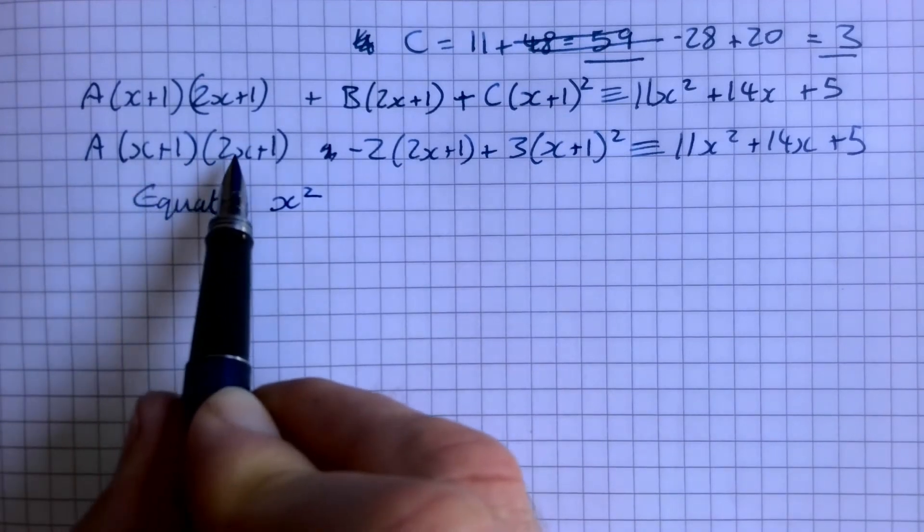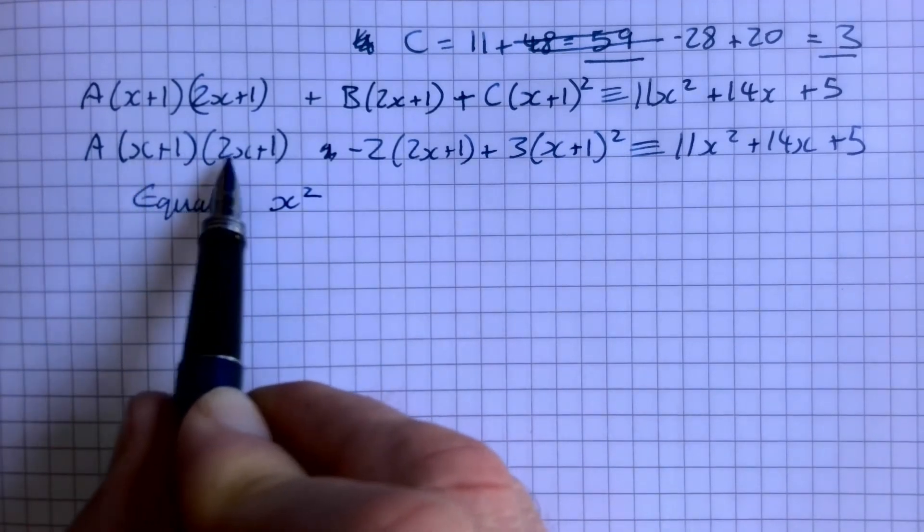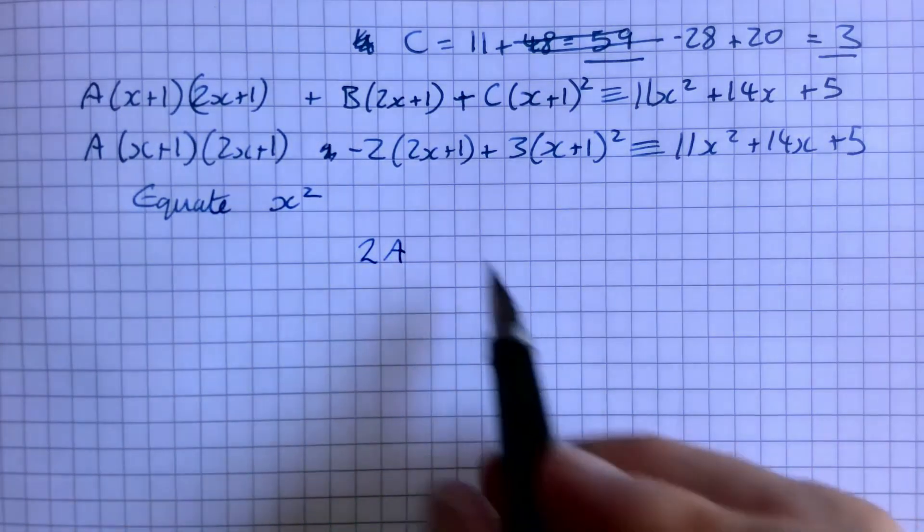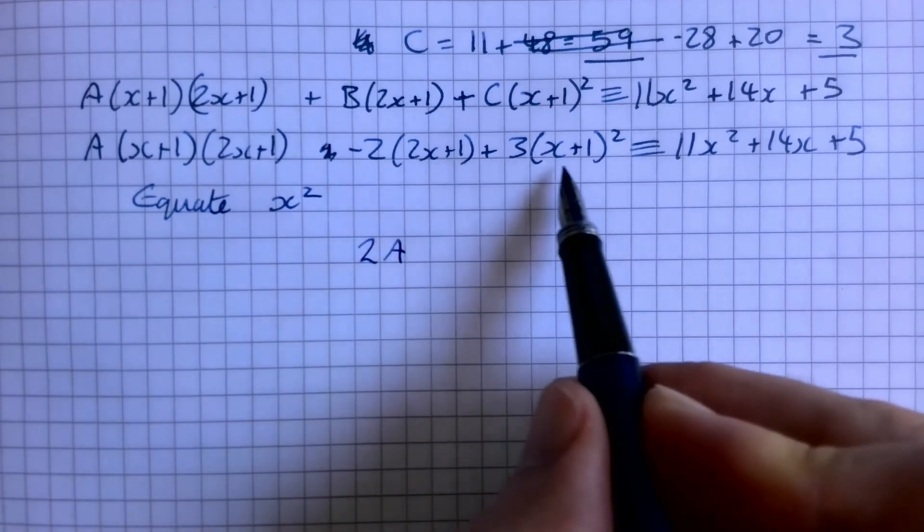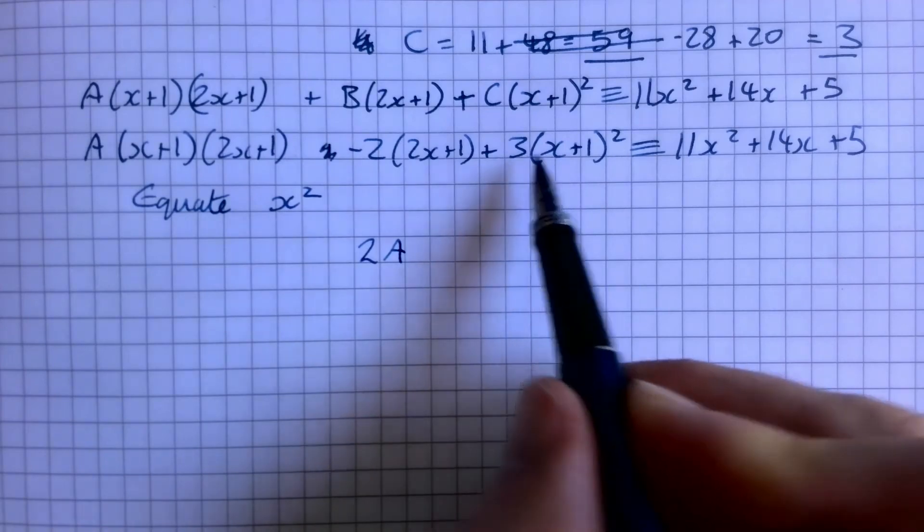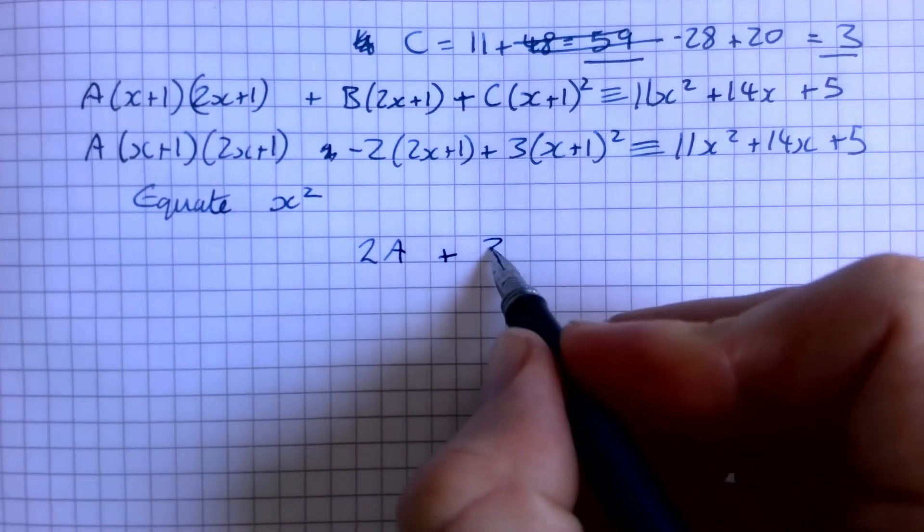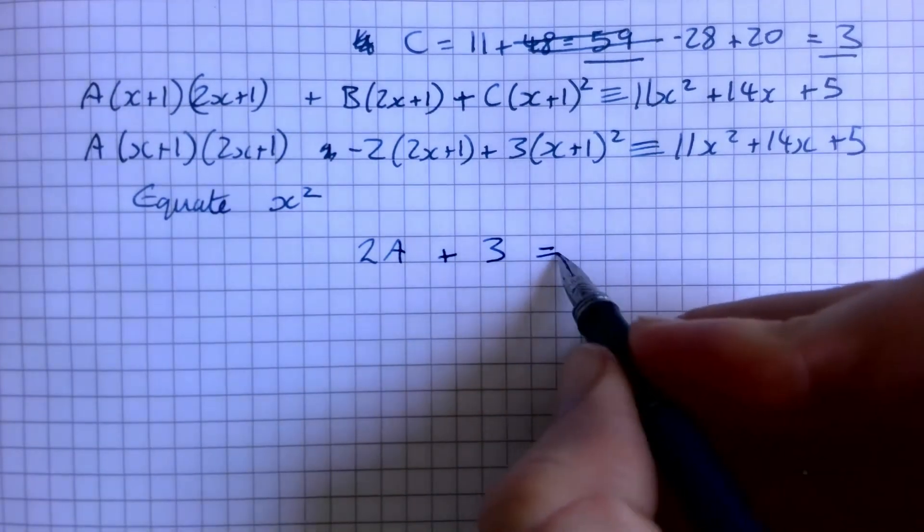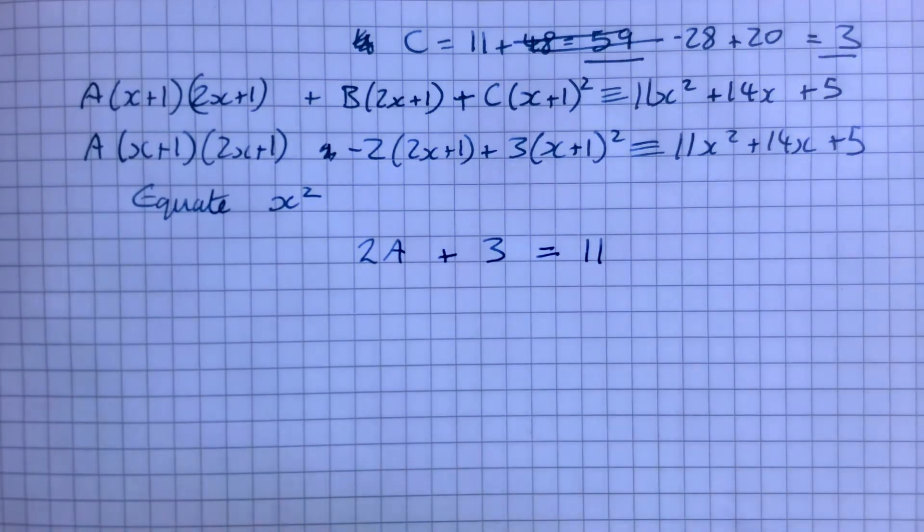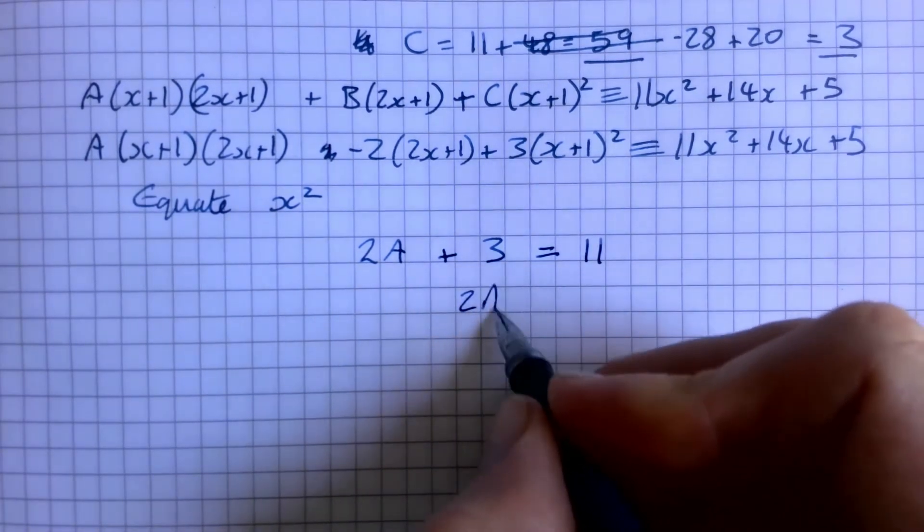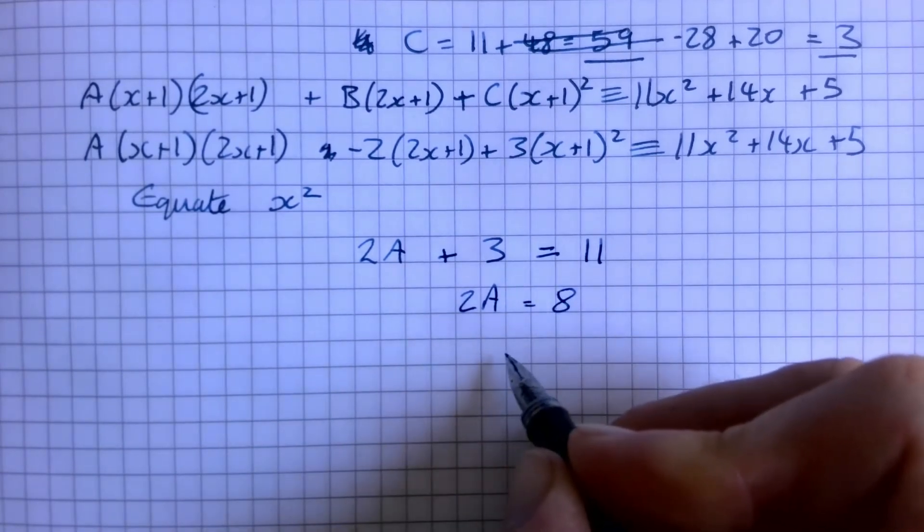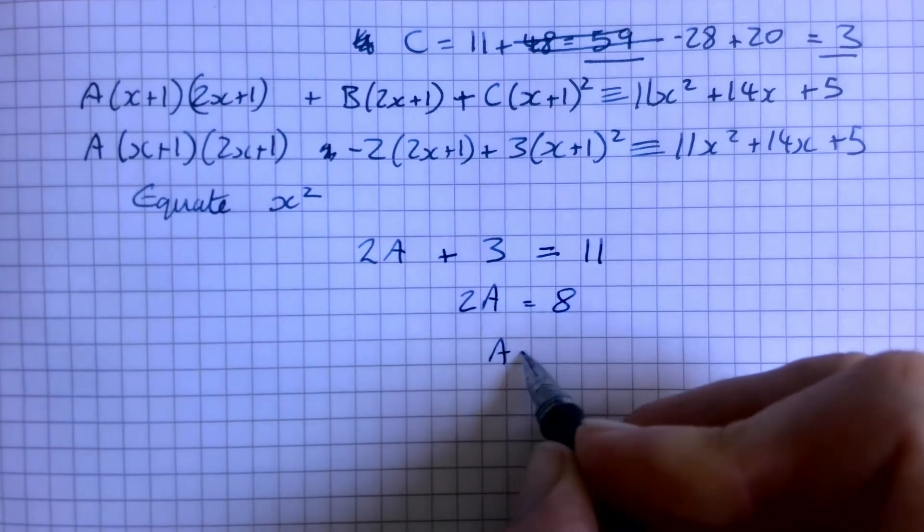So I'm just thinking about the coefficient of x squared now. Over here, what coefficient of x squared am I going to get? I'm going to get 2x squared times A, so that gives me 2A. Here I get no x squared at all. Here I'm going to get x squared plus 2x plus x, aren't I? So x squared times 3 will give me 3x squared, so it's the 3 I'm interested in. And over here I've got 11x squared. So then all I have to do is take 3 from both sides and I get 8, and then I divide both sides by 2 and I get A equals 4.